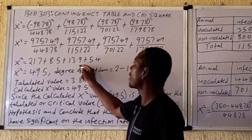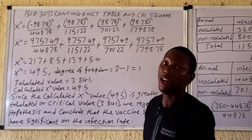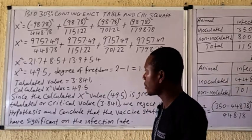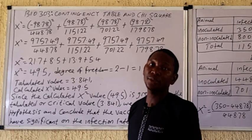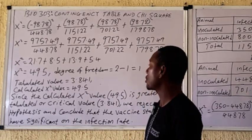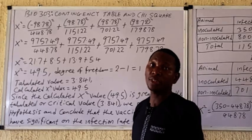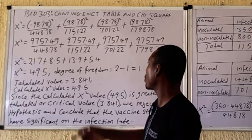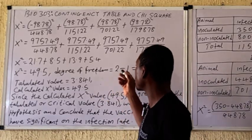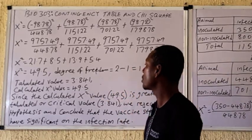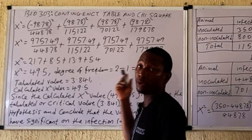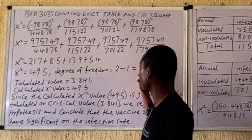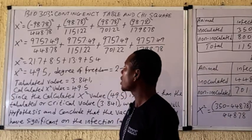Adding everything together gives a chi-square value of 49.5. The next step is to get the degree of freedom, which is essential to obtain the tabulated critical value. The degree of freedom is the number of categories minus one. Since this is a two-by-two chi-square with two categories, two minus one equals one.